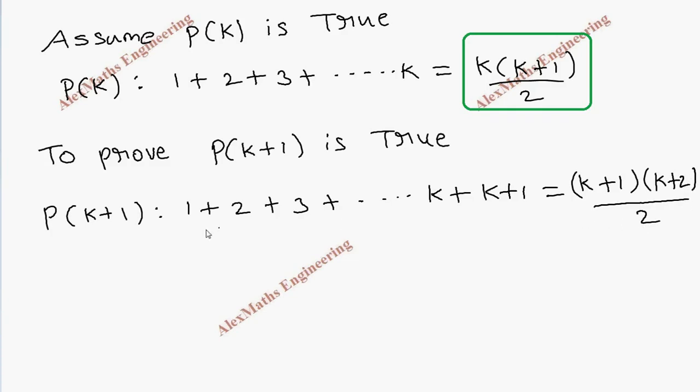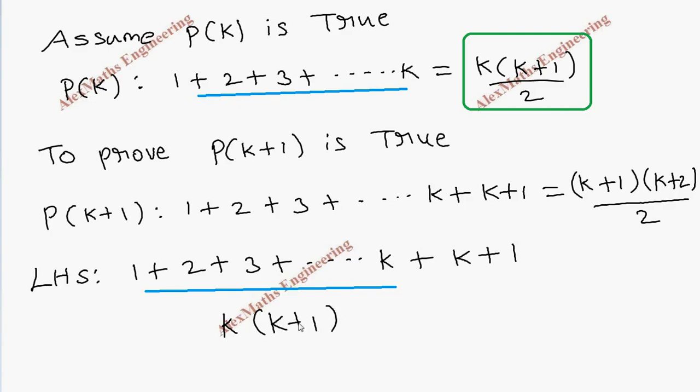For proving this, we take LHS. Once again, 1 + 2 + 3 + ... + k + (k+1). From the series, we already have written this entire value as k(k+1)/2, so here it is k(k+1)/2, and after that we also have one more term left, which is k+1.